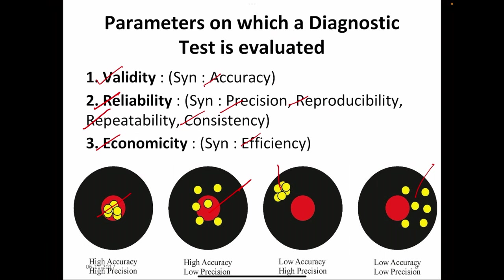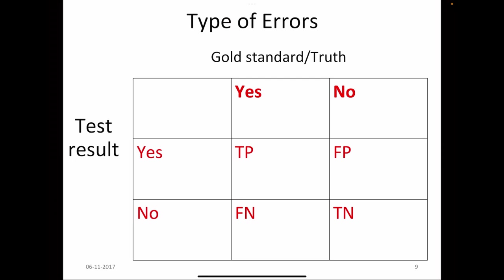Validity is the ability of the test to detect what it is supposed to measure. Reliability or repeatability is the ability of the test to produce the same results when it is repeated. We need to understand the type of errors before going into the accuracy calculations.